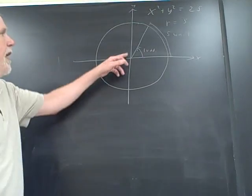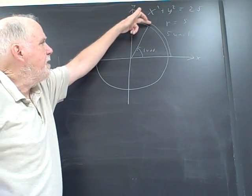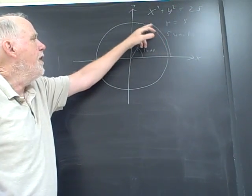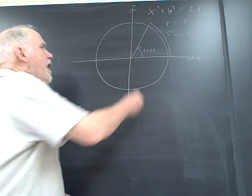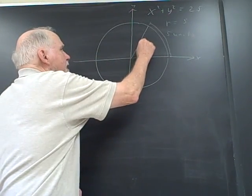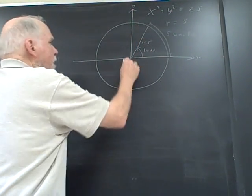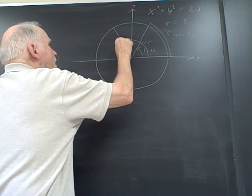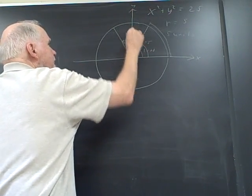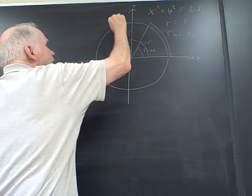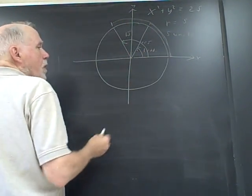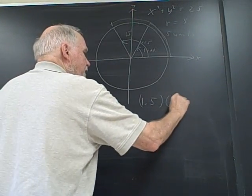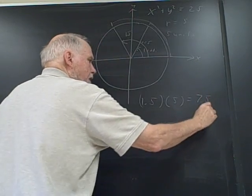So an angle of one radian will subtend an arc length of one radius, and the radius here we know to be 5, r equals 5. So if I were to go one and a half radians like this, an angle of 1.5 radians, then my arc length starting here all the way back would be 1.5 times 5 or 7.5 units.